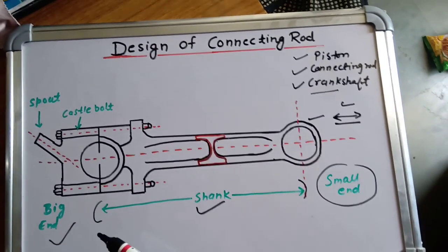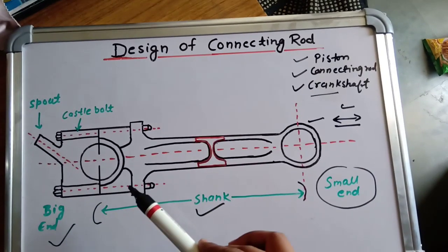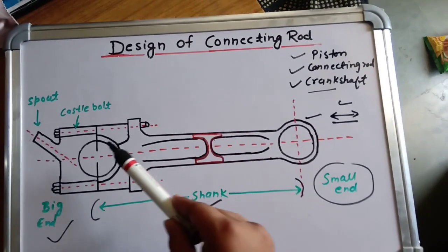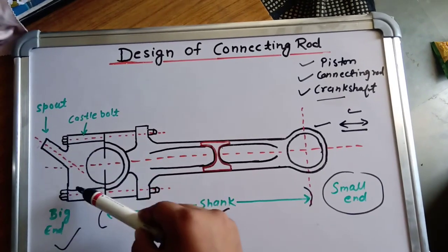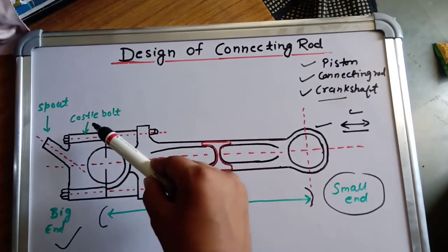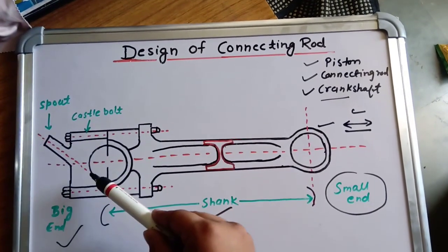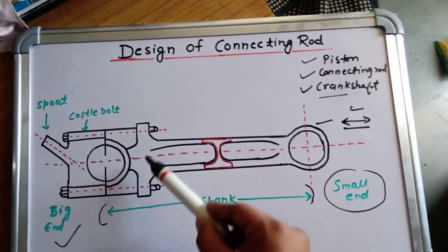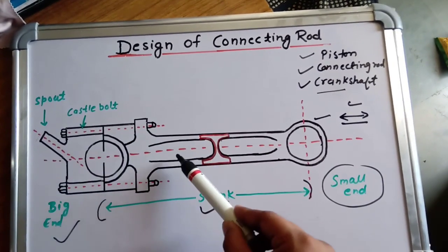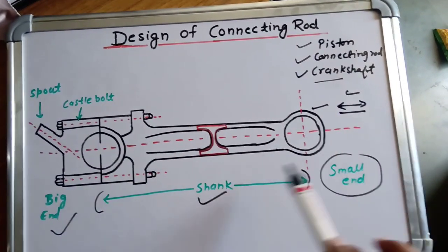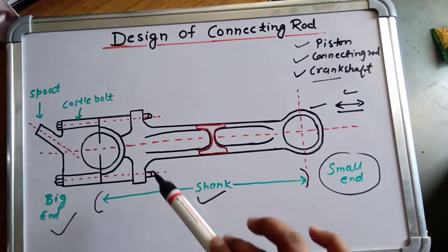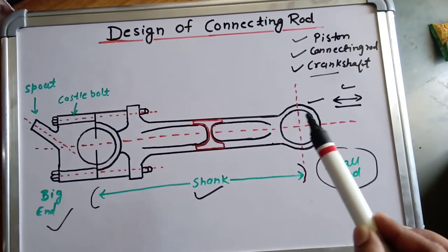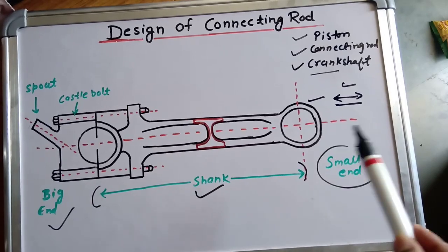The big end of the connecting rod is split into two parts. In the first part, two bolts called castle bolts are provided, and in the other half it is connected to the connecting rod. This is the whole diagram of the connecting rod.